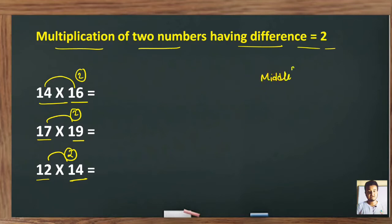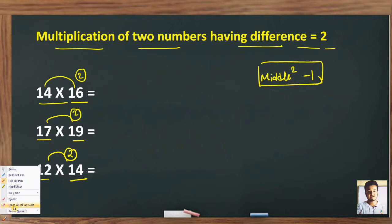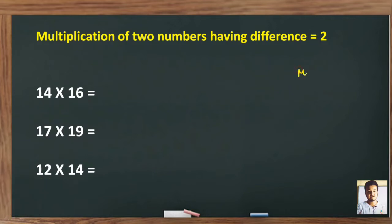Remember this trick: middle square minus one. Now see how will I solve this. Middle square minus one. So 14 and 16, what is the middle number here? The middle number between 14 and 16 is 15. So middle square minus one, that means 15 square minus one.